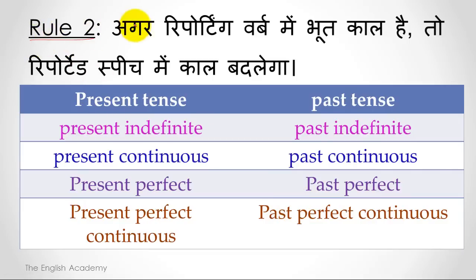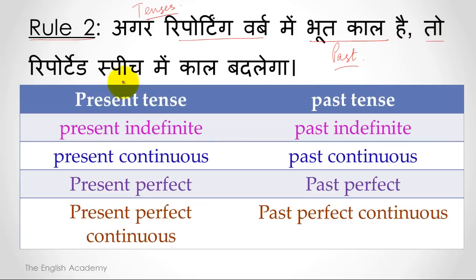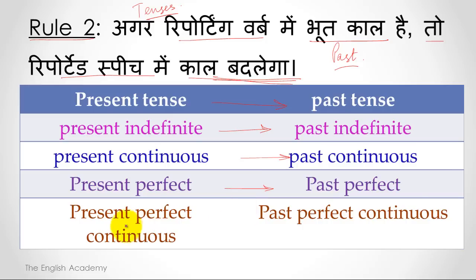Rule 2: If there is past tense in the reporting verb, the tense of the reported speech changes as follows: Present indefinite changes to past indefinite. Present continuous changes to past continuous. Present perfect changes to past perfect. And present perfect continuous changes to past perfect continuous. Let us see examples for each of these. Example for present indefinite changing to past indefinite: 'He had said to me, We play.' This becomes: 'He had said to me that they played.'